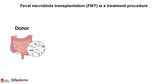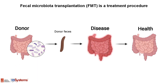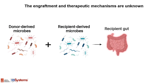Fecal microbiota transplantation is a medical procedure to transfer the intestinal contents of healthy donors to recipients to treat a different spectrum of disorders. After FMT, the donor's microbes can engraft in the recipient's intestines. However, the colonization principle and therapeutic mechanism of donor bacteria haven't yet been clearly described.